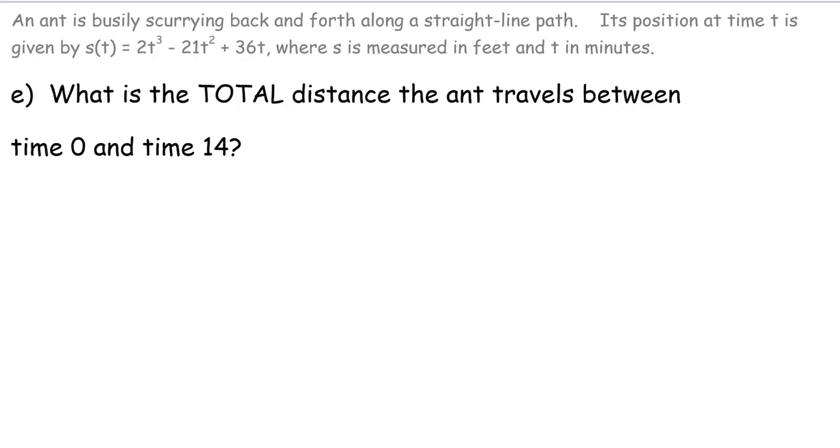Okay, there's more to this problem. This is kind of the grand finale of the problem. It's going to incorporate some of the other parts of the problem. And we really have to think through this whole backwards and forwards, left and right idea to find the total distance traveled by the ant between time 0 and time 14. So here's what we know. We know that the only times the ant is at rest are time 1 minute and time 6 minutes. So those are the only times the ant could turn around. Because if you're going to turn around, you have to momentarily stop to go the other way. So what we're going to do is we're going to find the distance from time 0 to time 1, and the distance from time 1 to time 6, and the distance from time 6 to time 14.